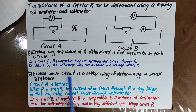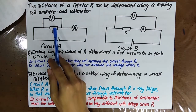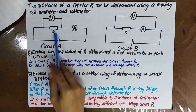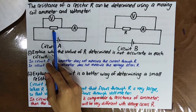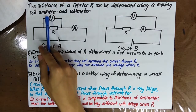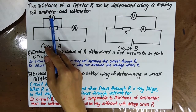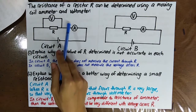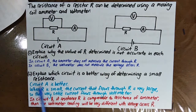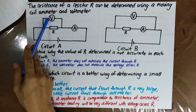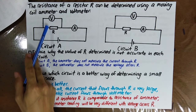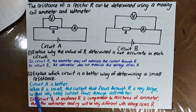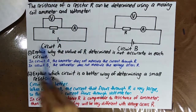Explain which circuit is a better way of determining a small resistance. When the resistance of the resistor is very small, the resistance of the voltmeter will be comparably higher, and therefore circuit A is better. Because when R is small, the current through R is very large, so very little current flows through the voltmeter — so circuit A is better.